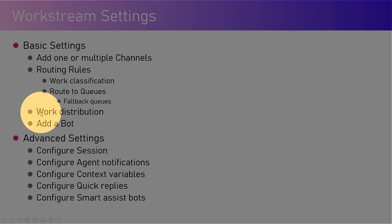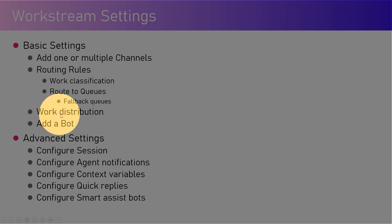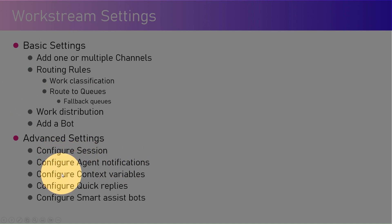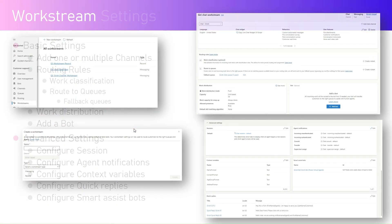The reason you add a bot to a workstream is that you don't want an agent directly involved if a bot can resolve the issue. But if the bot is unable to do that, it can route the information to a specific agent. In advanced settings, you can configure sessions, agent notifications, context variables, quick replies, and smart assist bots.